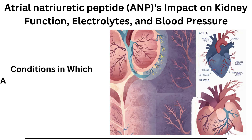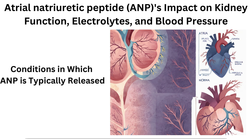Conditions in which ANP is typically released: ANP release is primarily stimulated by an increase in blood volume and atrial stretching. Several conditions and factors can lead to the release of ANP, including hypervolemia — an excessive blood volume due to factors like excessive fluid intake, heart failure, or kidney dysfunction. Hypertension: high blood pressure can trigger ANP release as a compensatory mechanism to reduce blood volume and pressure. Atrial stretch: any condition that causes the atria of the heart to stretch, such as atrial pressure overload or atrial distension, can stimulate ANP release. Physical activity: ANP levels may also increase during physical exercise due to increased cardiac output and atrial stretching.